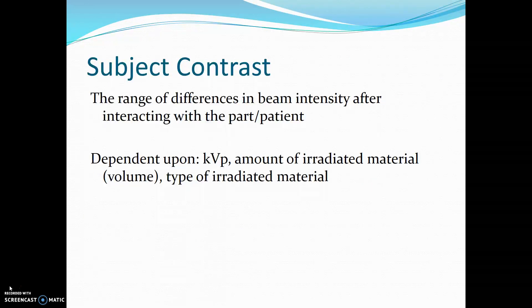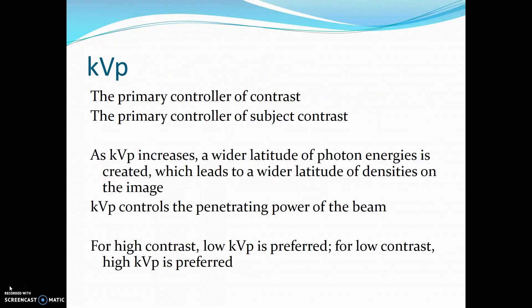Subject contrast is the range of differences in beam intensity after interacting with a part or patient. It is dependent upon KVP, the amount of irradiated material, and the type of irradiated material. KVP is the primary control of contrast and subject contrast.